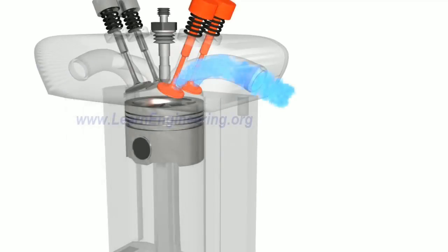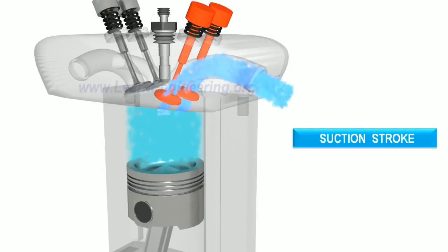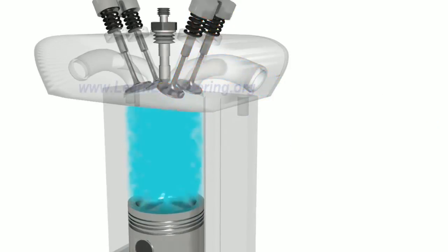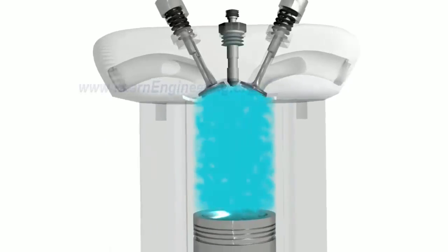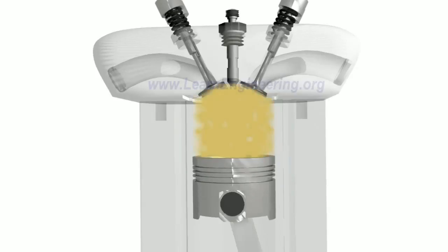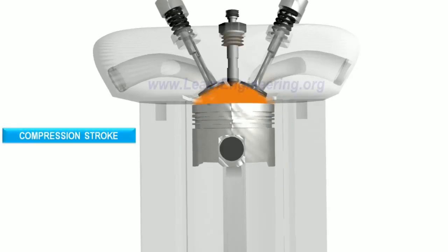During the intake stroke, the piston moves downward and the inlet valves are open, drawing in fresh air. The pressure and temperature are then compressed. The compressed air reaches the diesel self-ignition temperature.